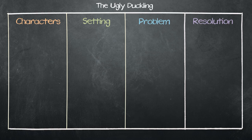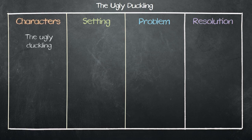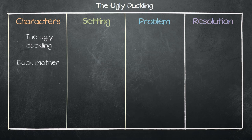Ask the students to identify the main characters in the story. Write their answers in the characters box. The Ugly Duckling, the Duck Mother, and the Ugly Duckling's brothers and sisters.